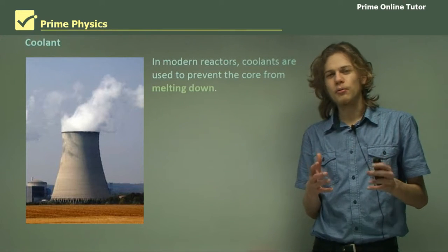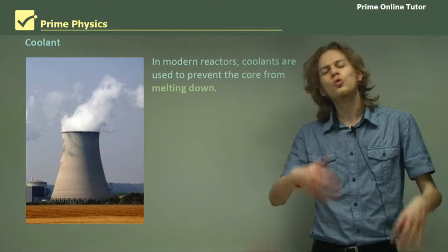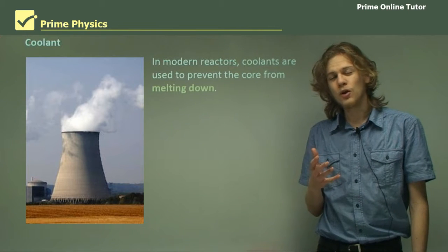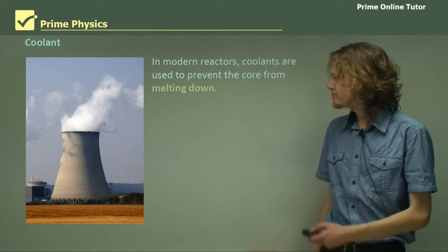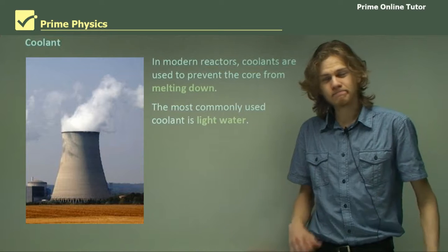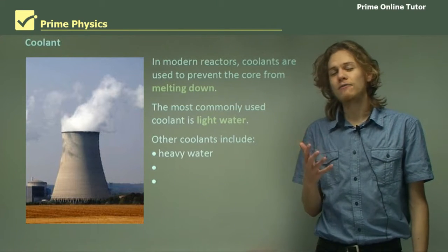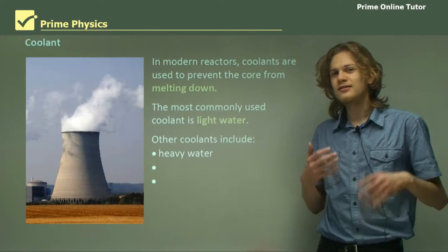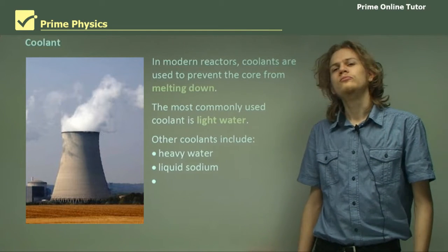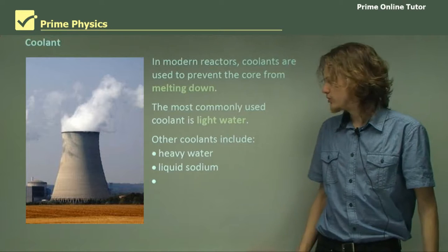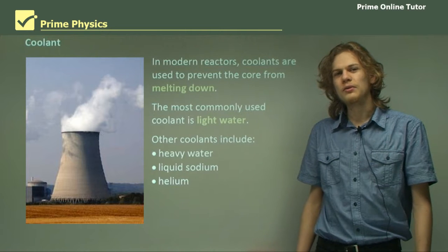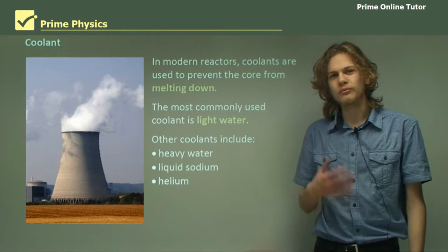One thing that Chicago Pile-1 did not have was a coolant to cool the whole thing down. In modern reactors, coolants are used to prevent the core from melting, because they get so hot otherwise. The most commonly used coolant is water, because it's easy to get. Other coolants include heavy water, which is a little harder to come by than ordinary water; liquid sodium, which is a good carrier of heat as it's a metal and conducts; and helium, which can be cooled down to very low temperatures to help cool things down.